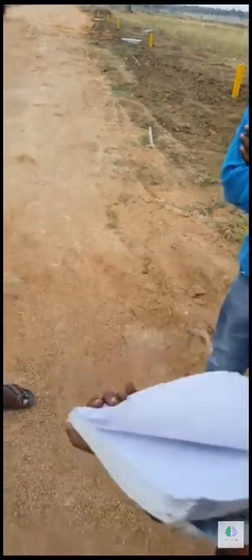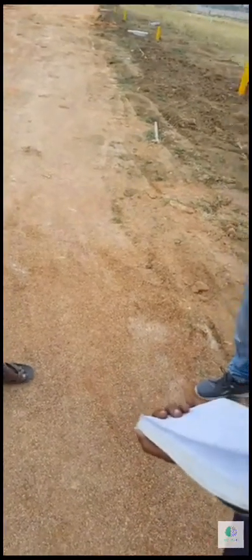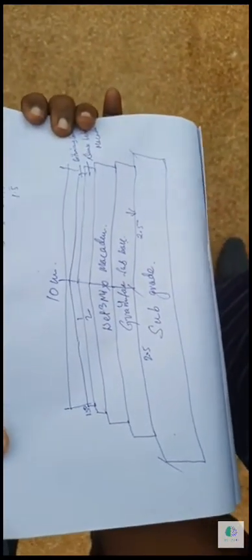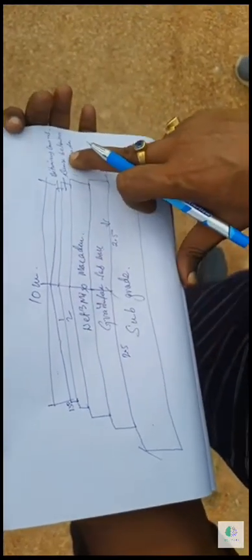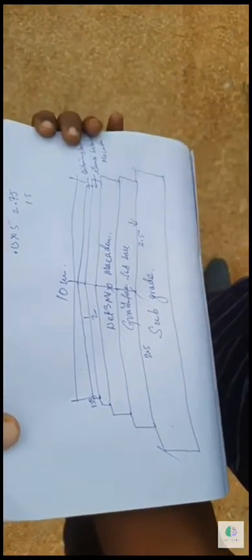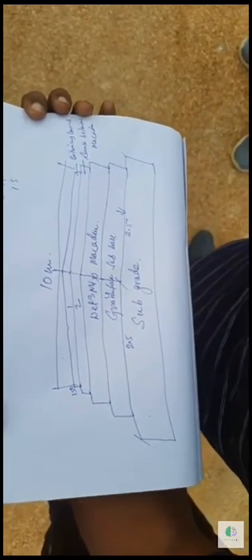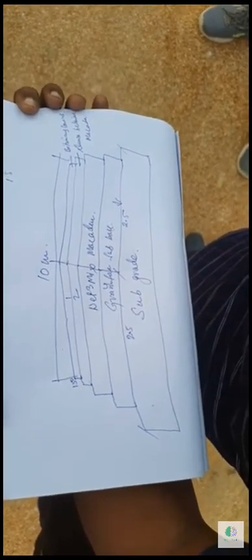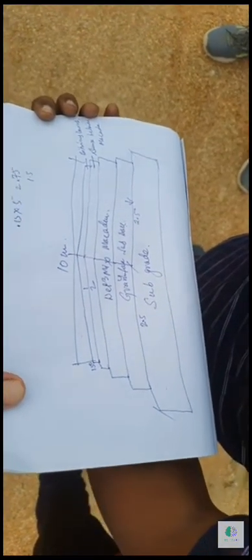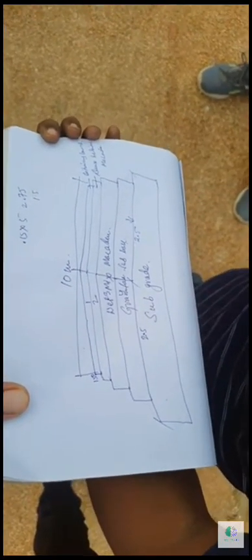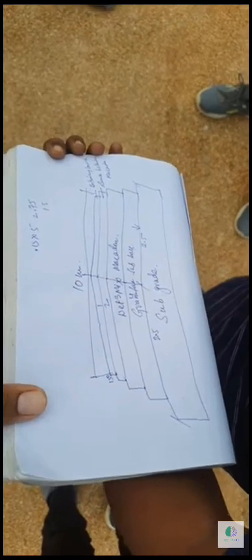After subgrade, granular sub-base — GSB — is a filter media and drainage layer. After GSB, you lay wet mix macadam for 200 mm, then dense bituminous macadam — DBM — at 50 mm, and bituminous concrete — BC — at 40 mm. This will be sufficient for this road, and it will not get damaged. With layers built to this thickness, approximately 10 years this road will not get damaged.